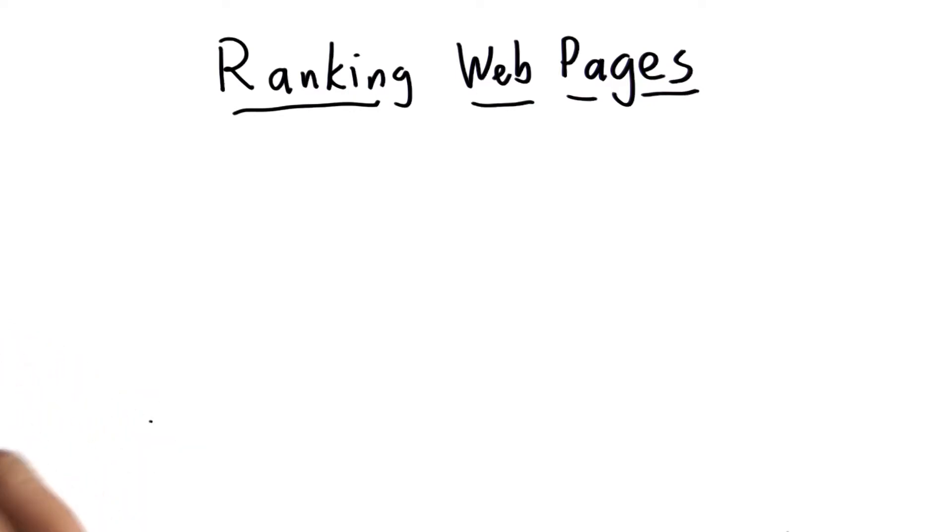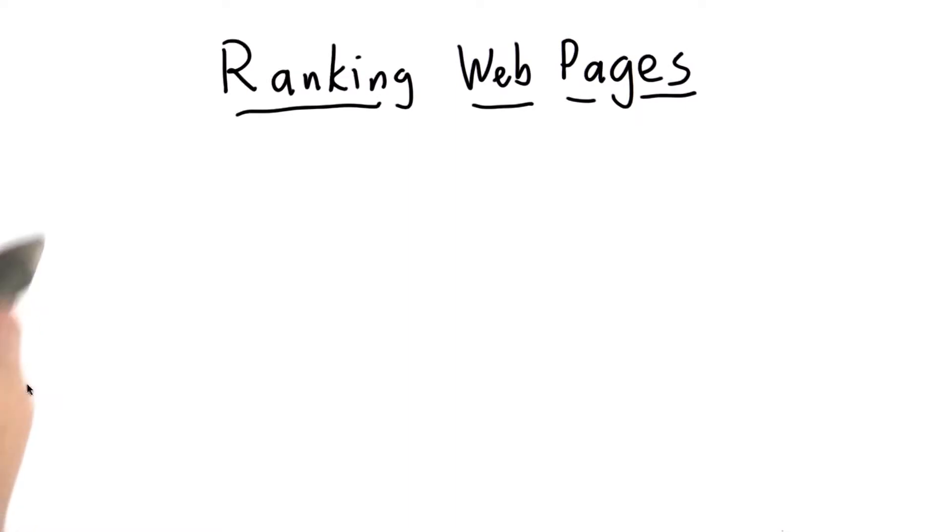As the web has grown, it's become more and more important for search engines to do this ranking well. What really distinguished Google from previous search engines was they had a much smarter way of ranking pages that produced more useful results where the first one or two results in response to the search query were often the very thing that the user was searching for. So now we're ready to start thinking about the problem of how to rank web pages.